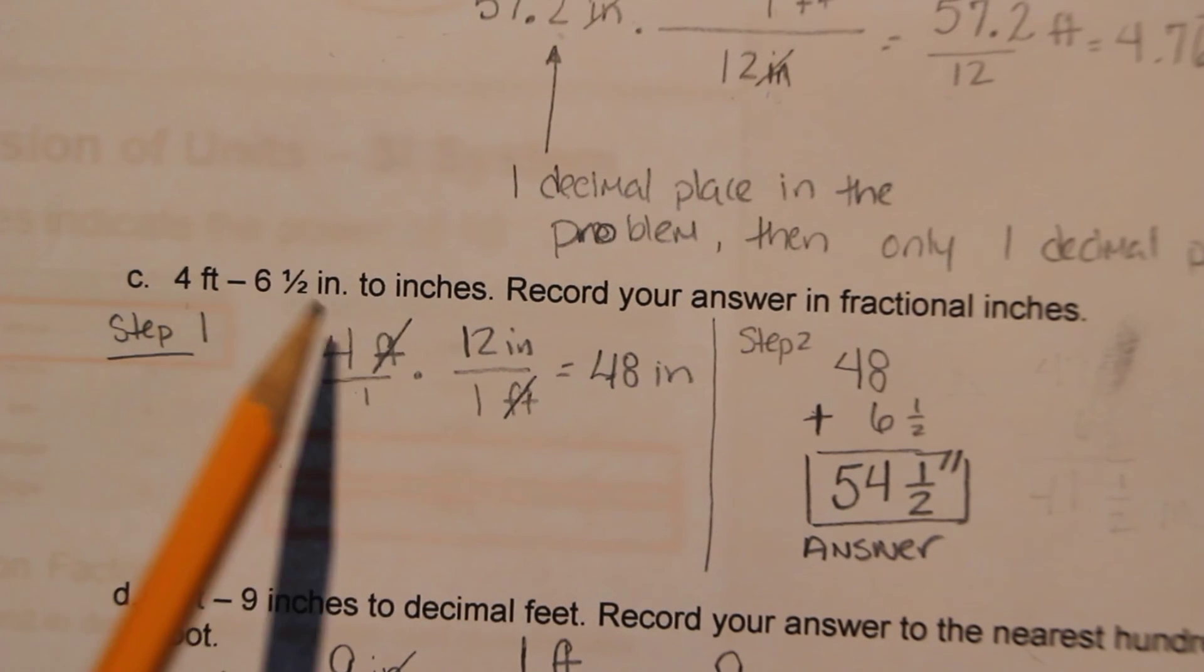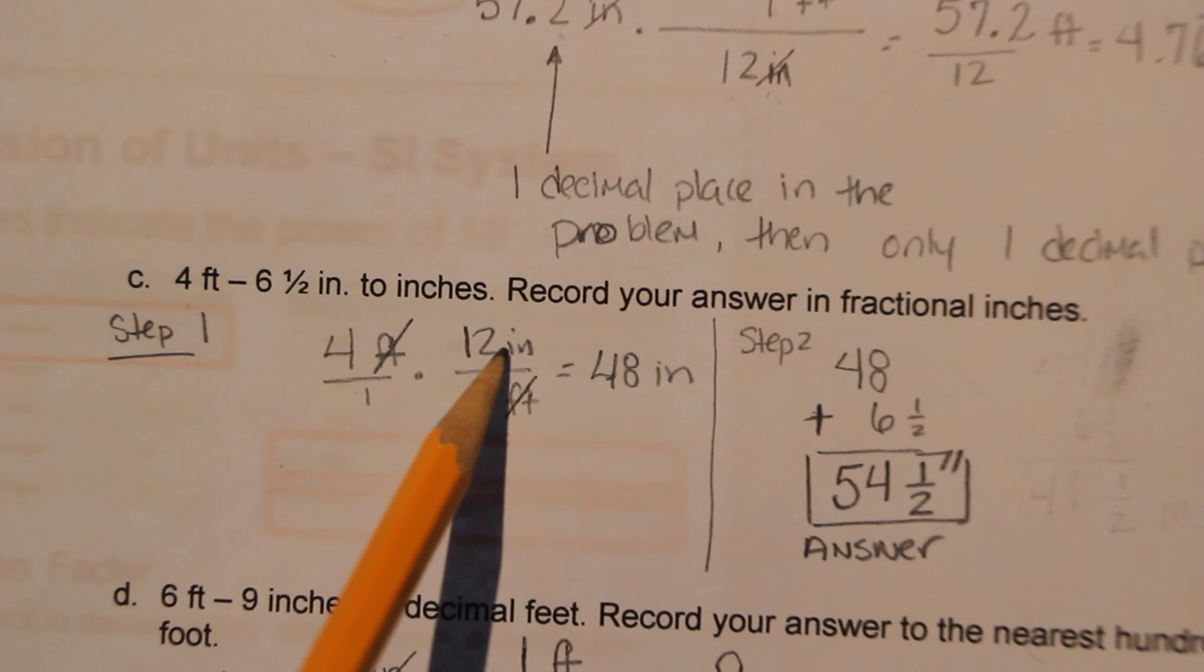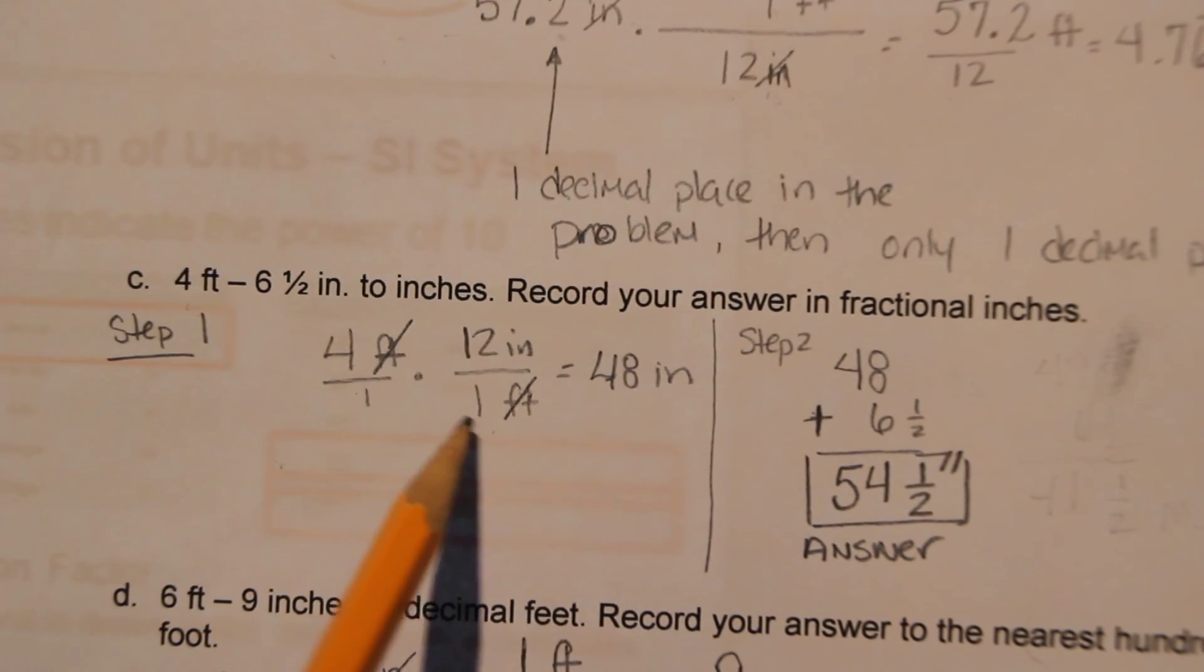So we need to convert the four feet to inches. So it's four feet. The conversion factor is 12 inches is the same thing as one foot. So there's our conversion factor or conversion ratio.